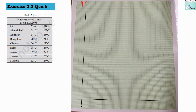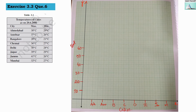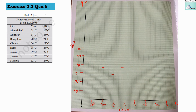Now let us start plotting the graph. This is the y-axis and this is the x-axis. I am taking two units for 10 degrees. Let us mark the maximum temperatures: Ahmedabad is 38, Amritsar is 37, Bangalore is 28, Chennai is 36, Delhi is 38, and Jaipur is 39. Similarly, I am going to mark all the maximum and minimum temperatures and draw the bar graph accordingly.